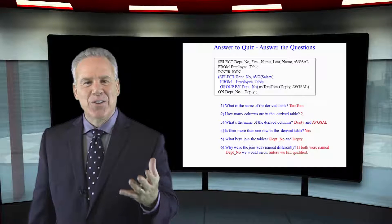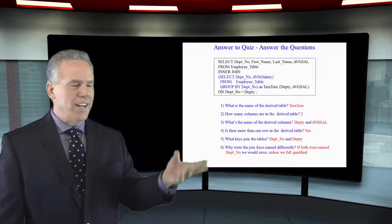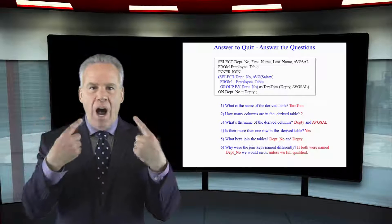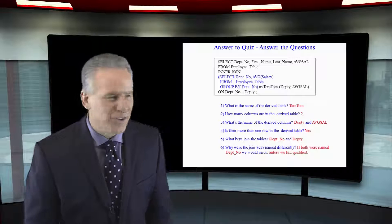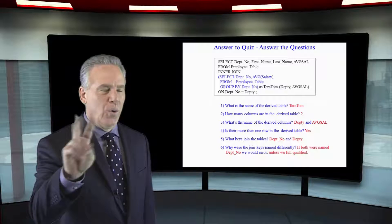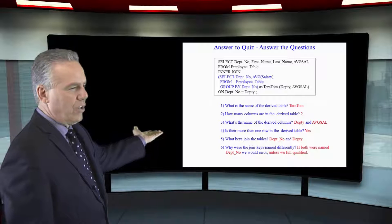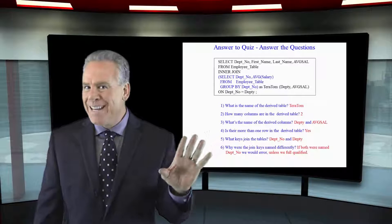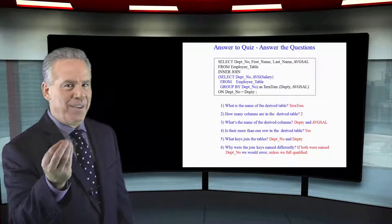Here's the answer to those questions. I'll bet you nailed those. What is the name of the derived table? Tom, your favorite teacher. How many columns are in the derived table? Two. What's the name of the derived columns? Deptee and AVG Sal.